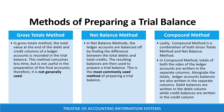The compound method is a combination of both the gross total method and the net balance method. In the compound method, totals of both sides of the ledger accounts are written in separate columns. Alongside the totals, ledger account balances are also written in separate columns — that is, debit balances are written in the debit column, while credit balances are written in the credit column.